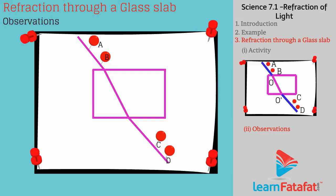Observations. In the glass slab, refraction of light takes place two times. First, at the time of entering the glass slab, that is at point O and also while leaving the glass slab, that is at point O dash.